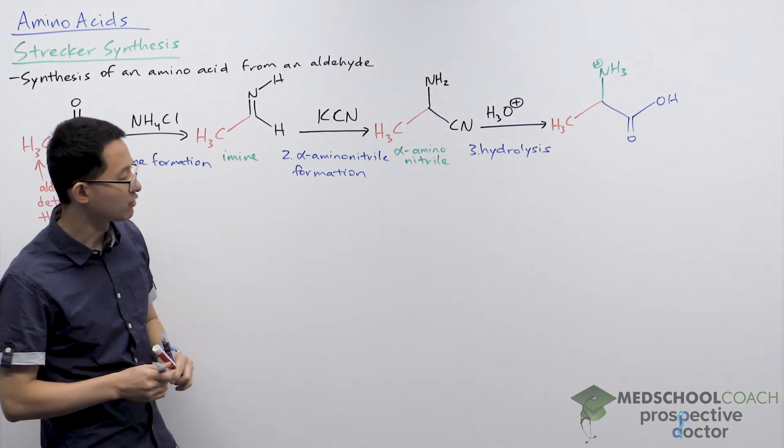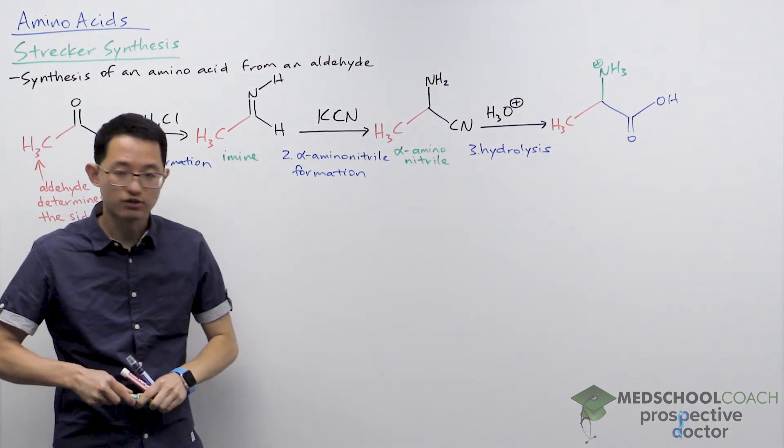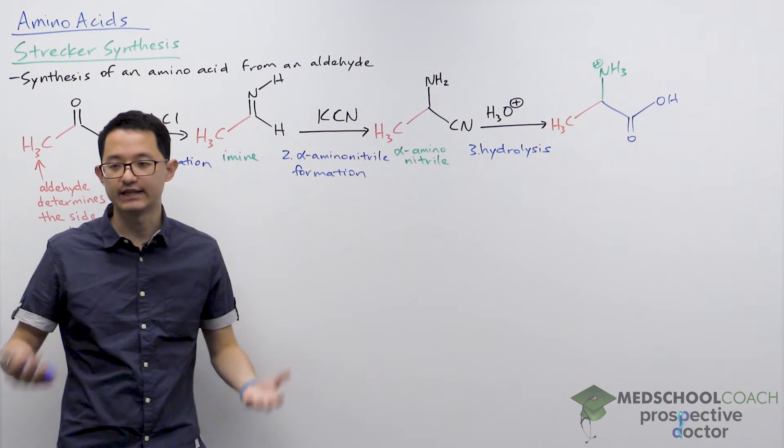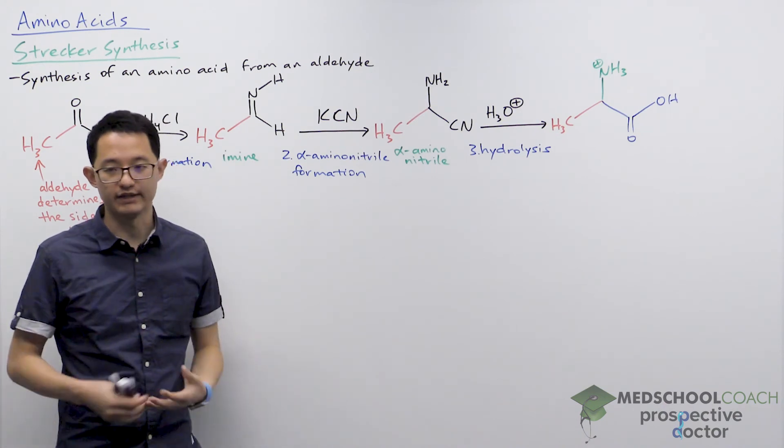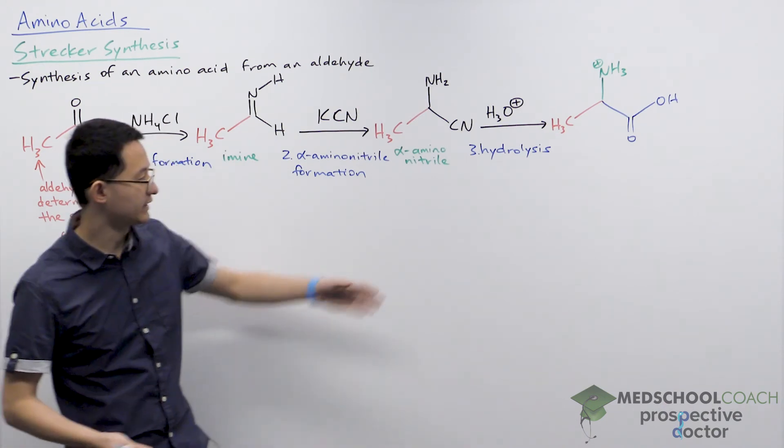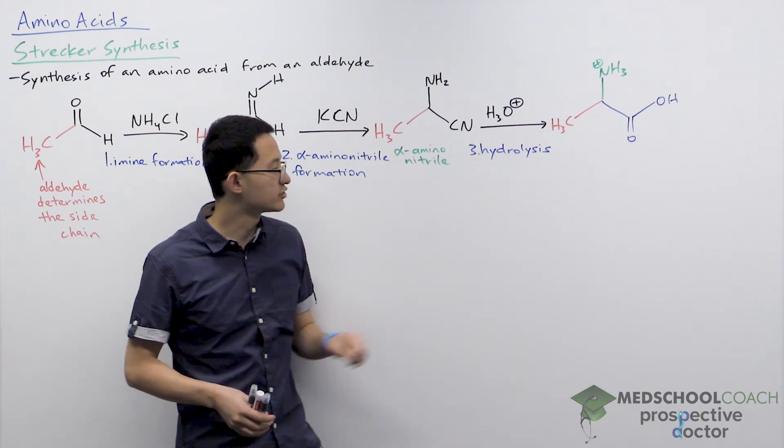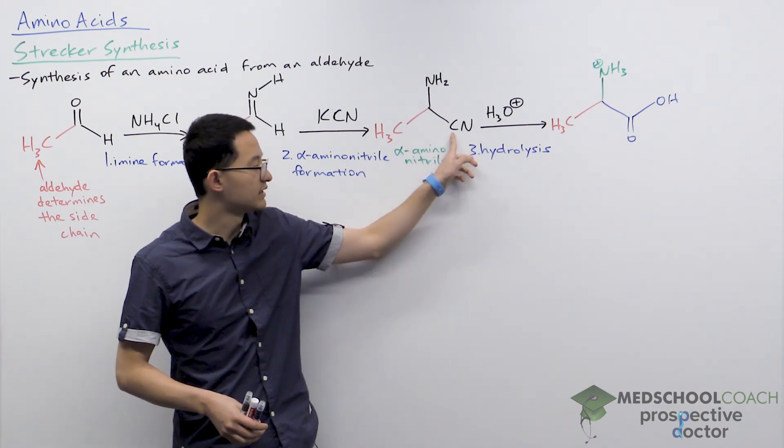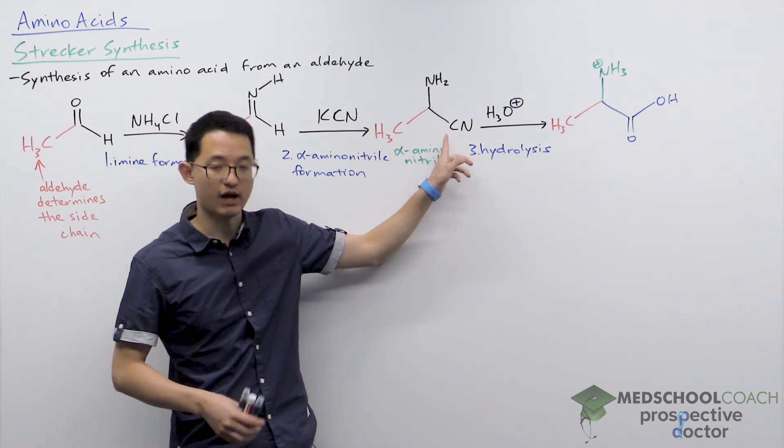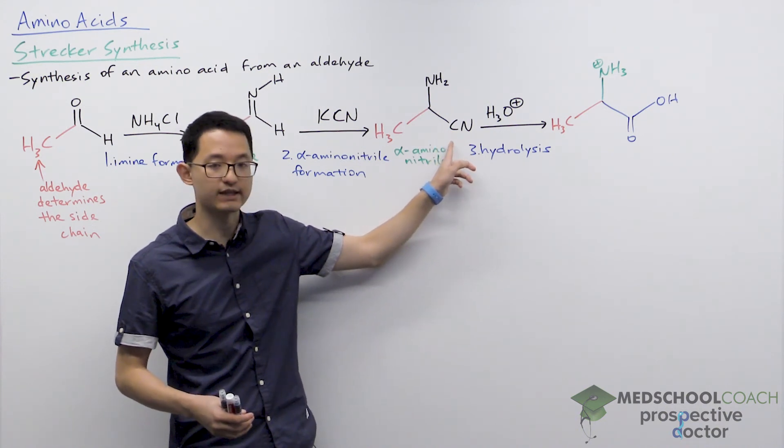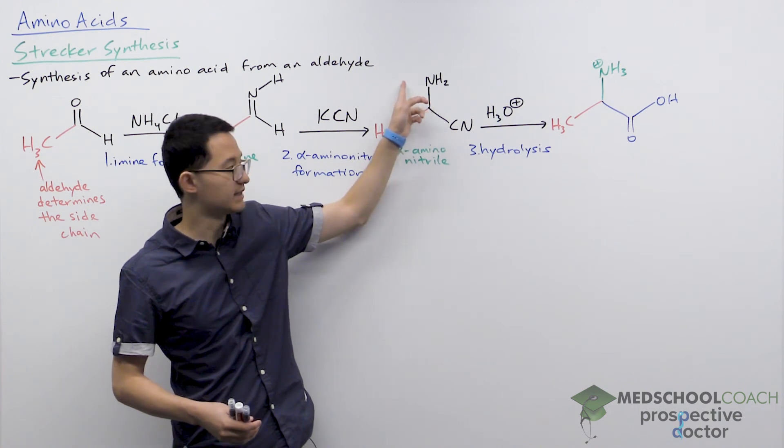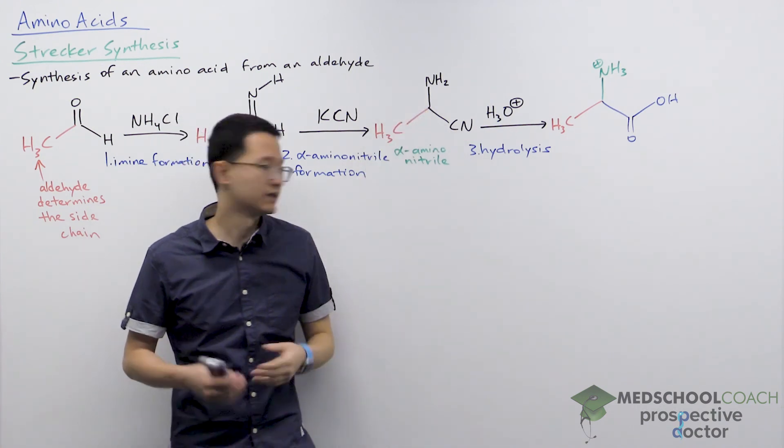Our last step is hydrolysis. So hydrolysis is simply just taking your compound and exposing it to water, and here it's going to be an acidic solution. In acidic solution, the nitrile group will actually hydrolyze to form a carboxylic acid. And of course, since the amino group is basic, it's going to become protonated.